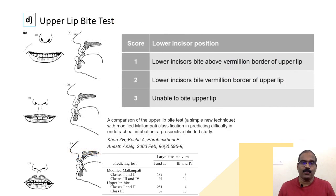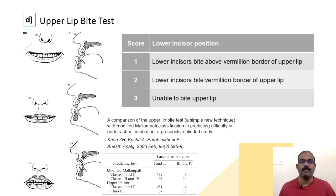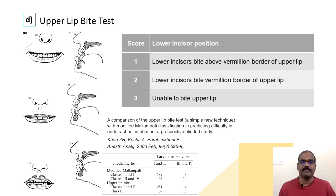Part four was about the upper lip bite test. Score 1: lower incisors bite above the vermilion border of the upper lip. Score 2: lower incisors bite the vermilion border but not beyond. Score 3: unable to bite the upper lip. A comparison of the upper lip bite test with modified Mallampati classification is mentioned in an article in Anesthesia and Analgesia, with a comparison table provided for reference.